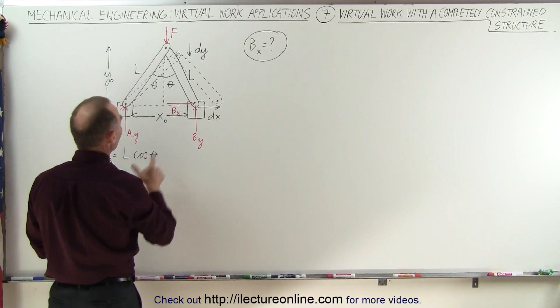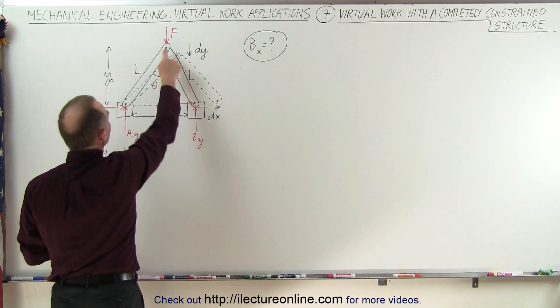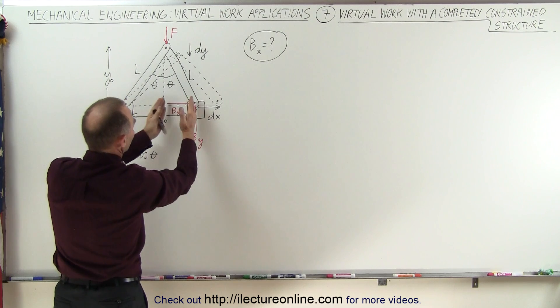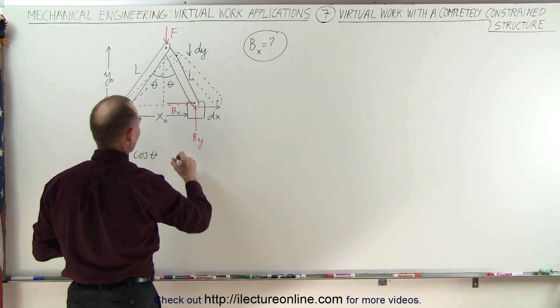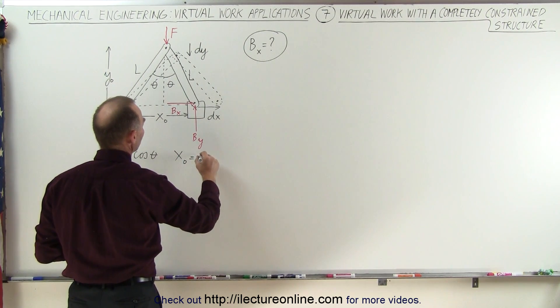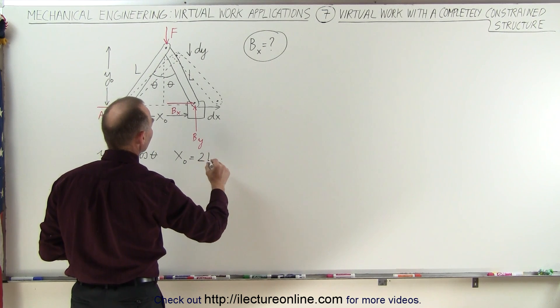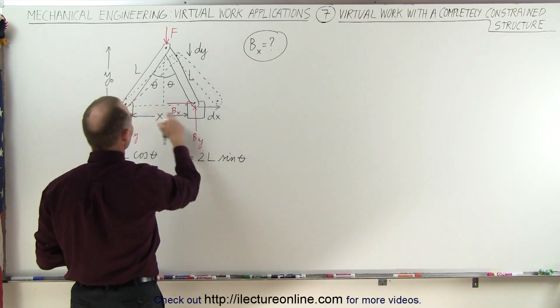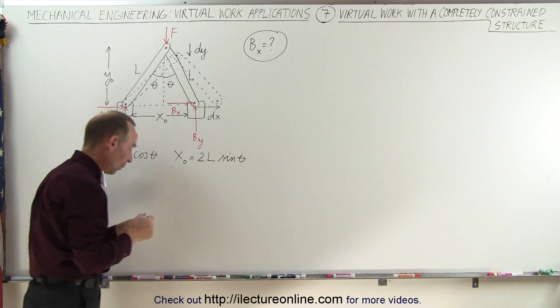Now, X can be defined by taking L times the sine of theta, but we have to take it twice because we have to account for this portion and this portion. So X sub naught is equal to two times the length of the members times the sine of the angle theta because X is opposite to the angle theta, the way it's defined.